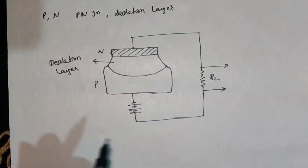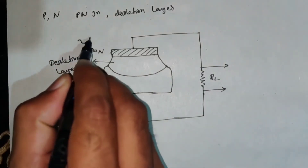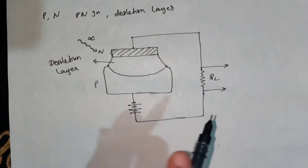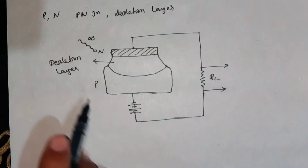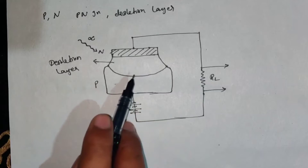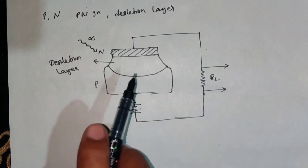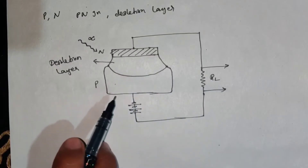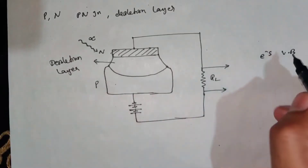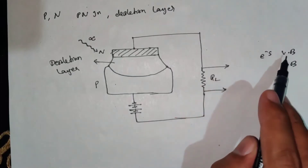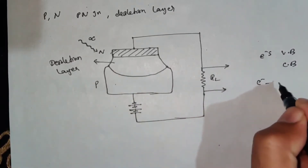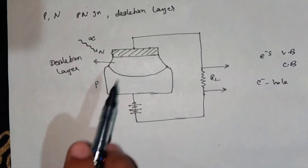Now we are going to have an external nuclear particle in this depletion layer - for example, an alpha particle. We are going to have a charged particle in this depletion layer, like a gas ionization chamber incident particle. Electrons in the valence band absorb energy from the alpha particle and excite to the conduction band, causing the production of electron-hole pairs.